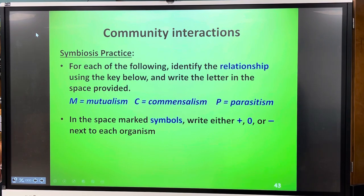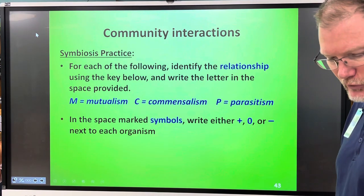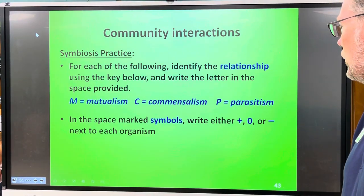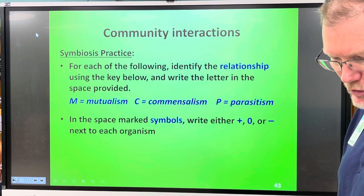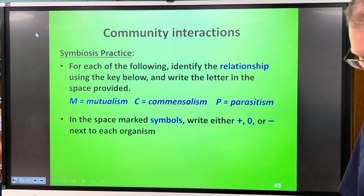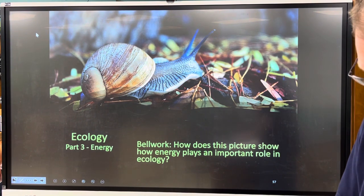So on page seven — actually continuing on — slides 40 through 56 are symbiosis practice. After the notes you're going to work with somebody for a few minutes to do questions one through six, filling in M, C, or P for the type of symbiotic relationship, and then using the symbols plus, zero, or minus for each organism in those relationships. If you want to go back to these notes to find answers and look at the pictures, you can do so.